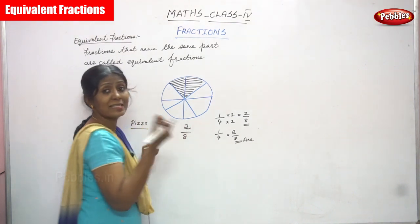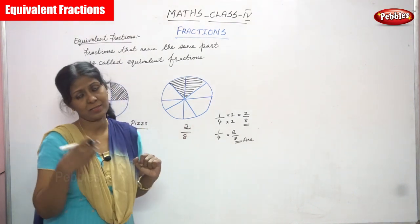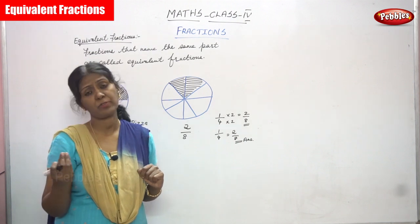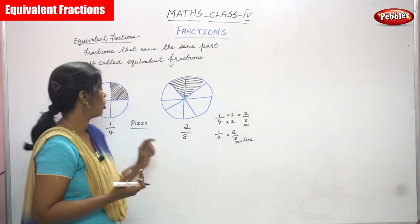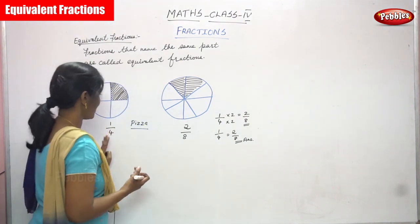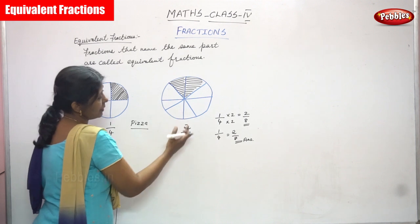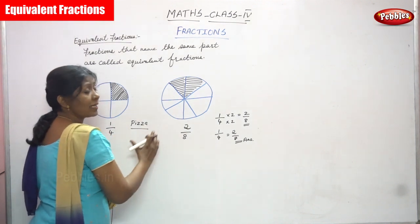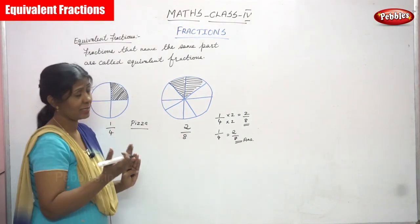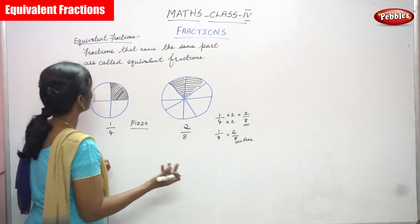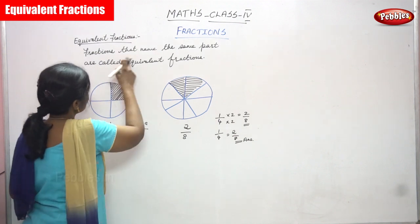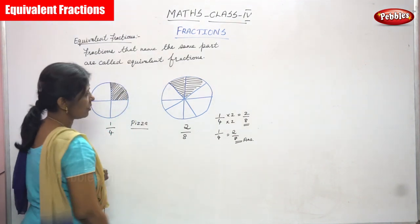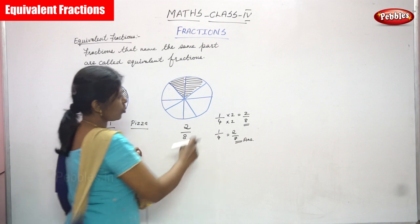Whoever eats the pizza — for example, Ram eats the one-fourth pizza, or Rahul eats the two by eight pizza. Both are similar, because fractions that name the same part are called equivalent fractions.